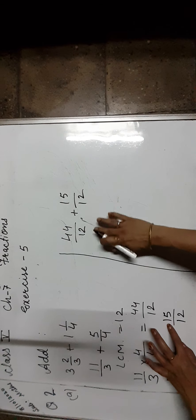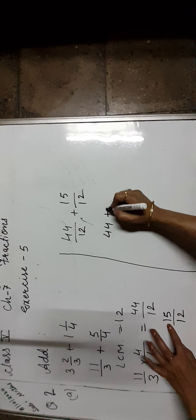Now take another fraction that is 5 upon 4. How much do we multiply? In 4 to get 12 — it is 3 times. So both numerator and denominator are multiplied by 3, which is equal to 15 upon 12. Now you can add both fractions: 44 upon 12 and 15 upon 12. Here, as you can see, both denominators are the same. So 44 plus 15 upon 12, which is equal to 59 upon 12.